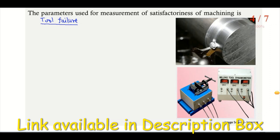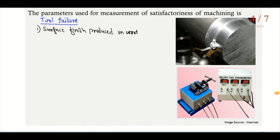The first parameter is surface finish produced on the workpiece. You can see this diagram. At the beginning of machining, it is found that an excellent, mirror-like surface finish is produced. So at the beginning, we are getting an excellent or mirror-like surface finish which can be produced by using the cutting tool on the workpiece.